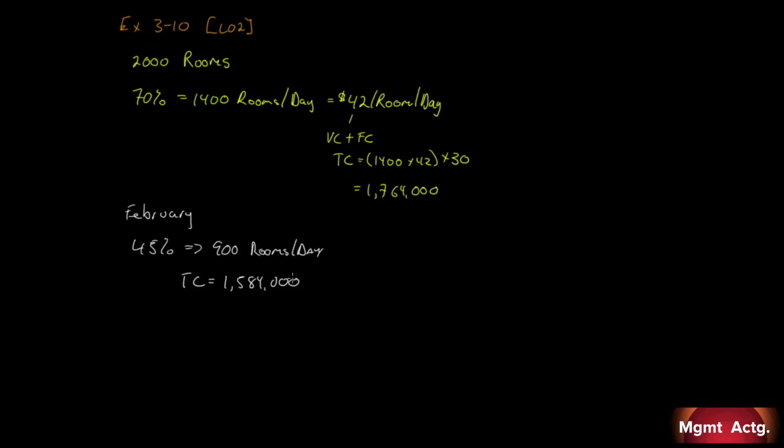What's required? Number one, estimate the variable cost per occupied room per day. Well, we can use a high-low method for that. That's what we've been doing the whole chapter, right? So, let's have a look at that. We're going to look at our x value and our y value. A high observation and a low observation. So, x is the number of rooms per day. Our high observation is 1,400. And we know the cost associated with that is $1,764,000. Our low observation is 900. And the cost associated with that is $1,584,000. So, the rest is math. This is 500. This subtraction will yield $180,000. And we just do this. And that will equal $360.